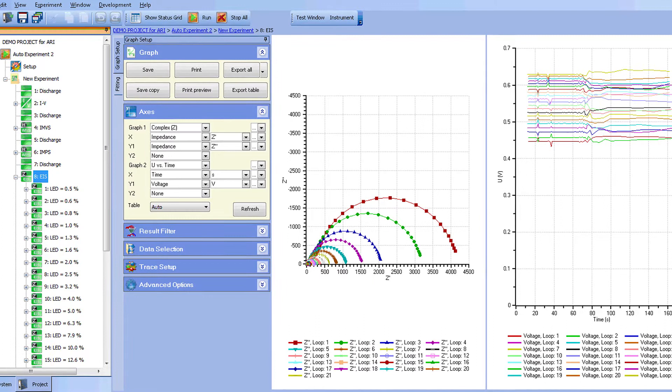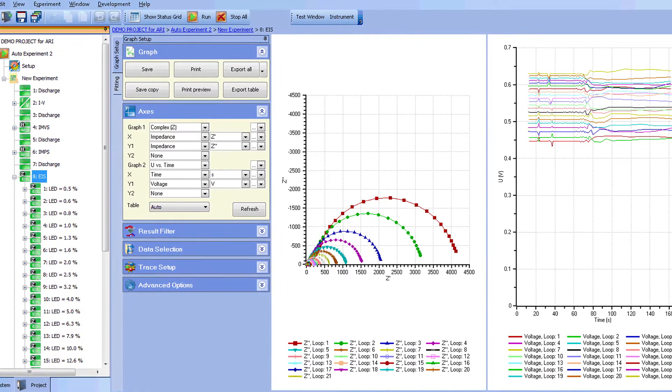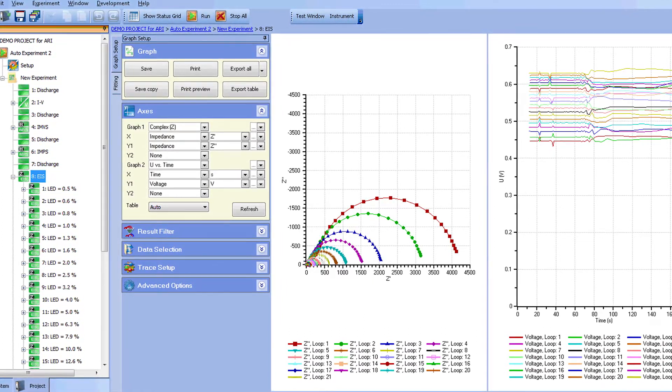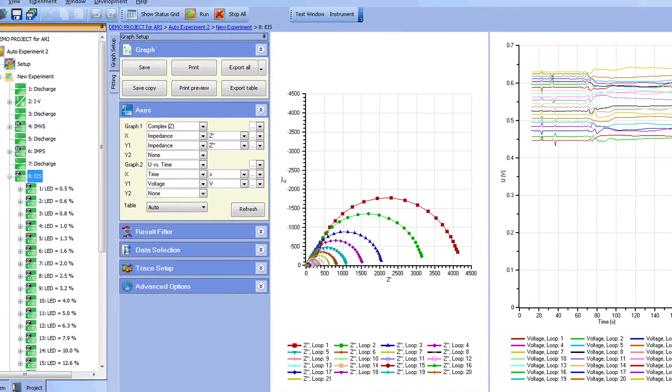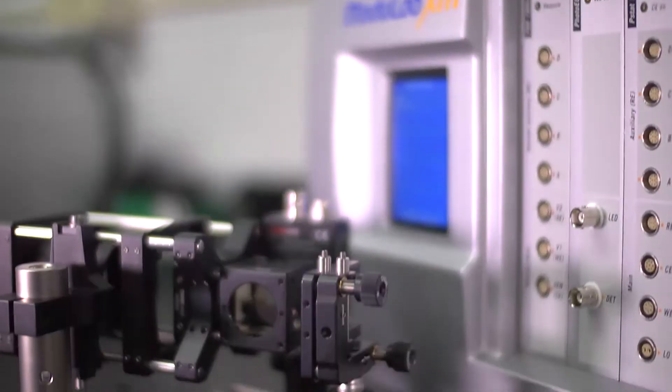Unlike other systems, the Modulab XM Photo electrochemical system was designed to allow all measurements to be run in sequence without further input from the end user. This greatly increases productivity and ease of use.